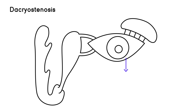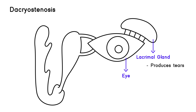As you can probably figure out, this is of course the eye. Right above the eye you have the lacrimal gland. The lacrimal gland is responsible for producing tears, and then the tears flow in this direction.